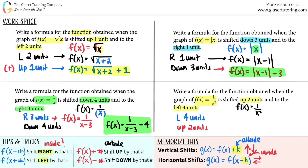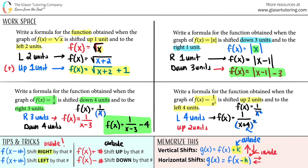The function in the denominator is x raised to the second power — that's the inside of the function. To shift left four units, I change inside the function: left is a plus sign, so it becomes x plus 4, all raised to the second power. The function is now 1 over (x plus 4) squared.